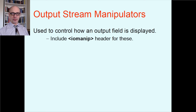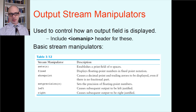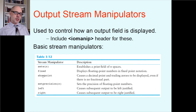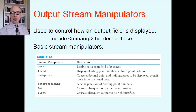Once you include the iomanip header, you have access to functions like these from the book's table. There's the setw function — set width — which says the next thing printed with cout will fill up n spaces. If you write setw(15), the next thing printed is going to take up 15 spaces on the screen. These are all things you send to the cout object — you write cout, left arrow, and any one of these function calls.